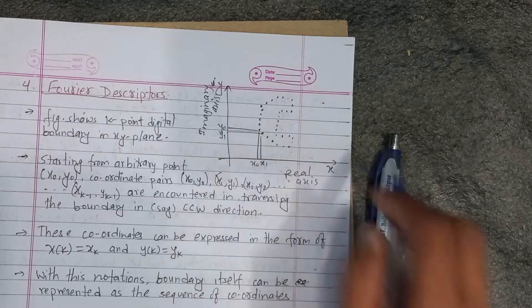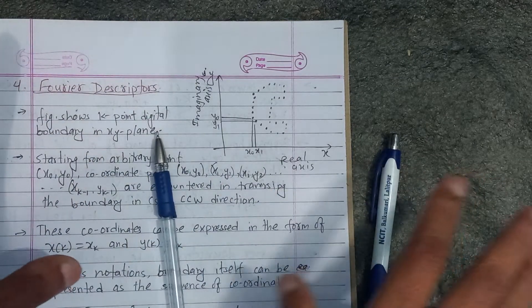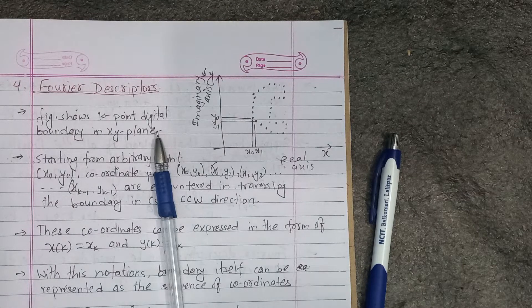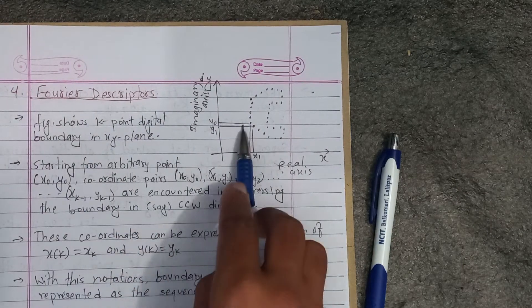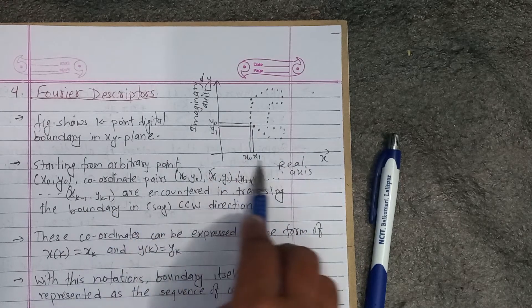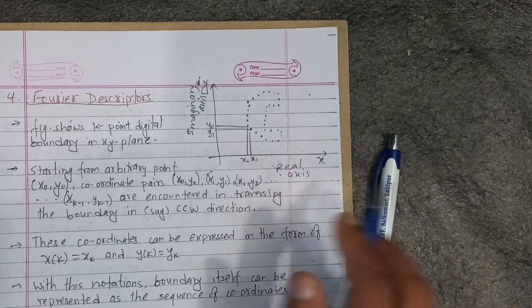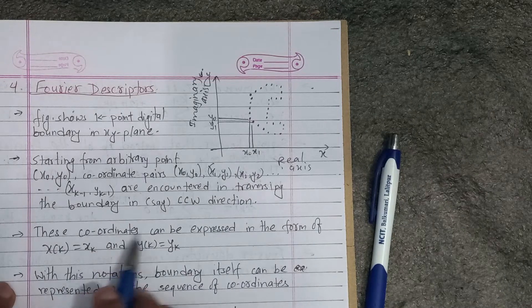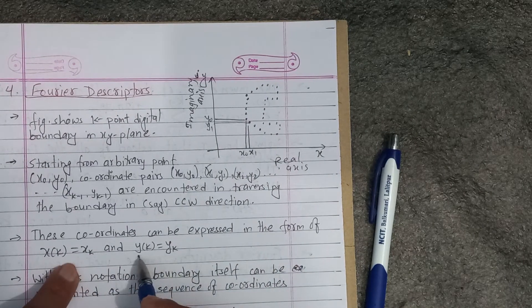Fourier descriptor is a straight line. Starting from arbitrary point x0, y0, we have a coordinate pair in the zone. We have a boundary trace in the direction, counterclockwise or clockwise.